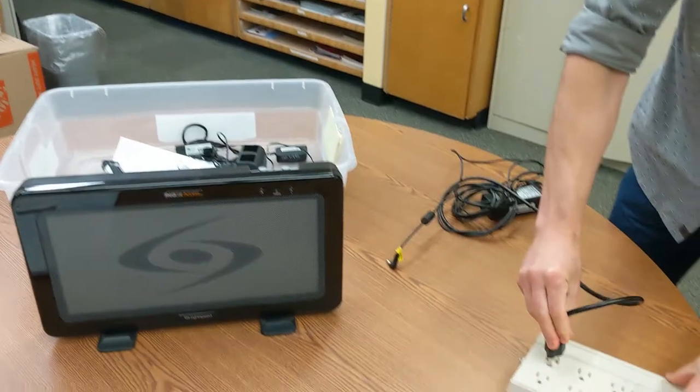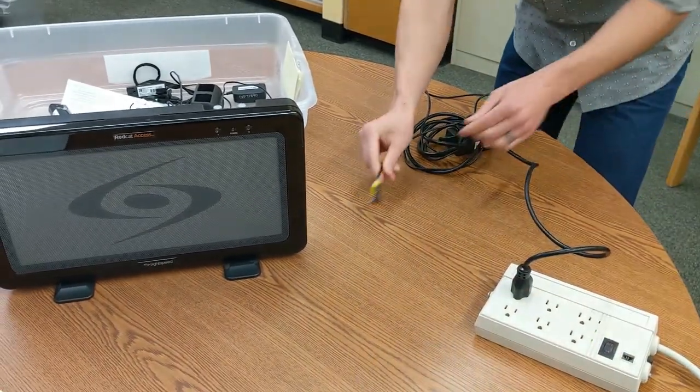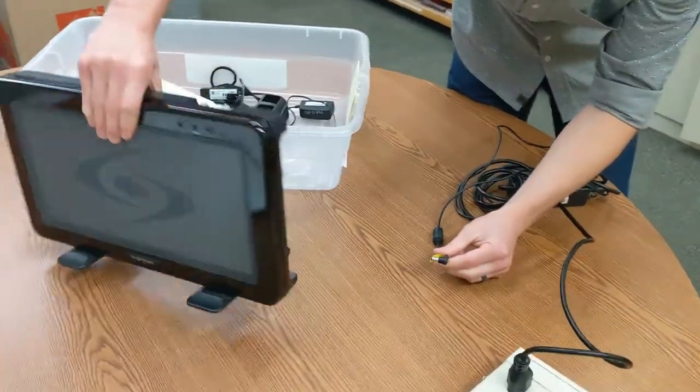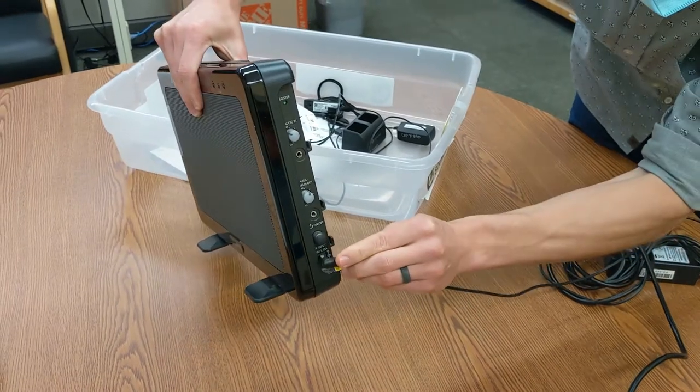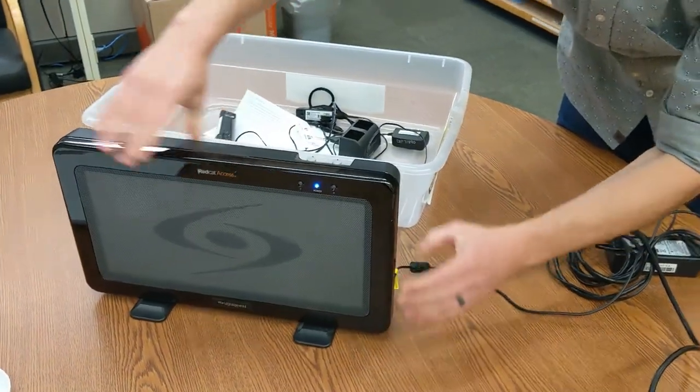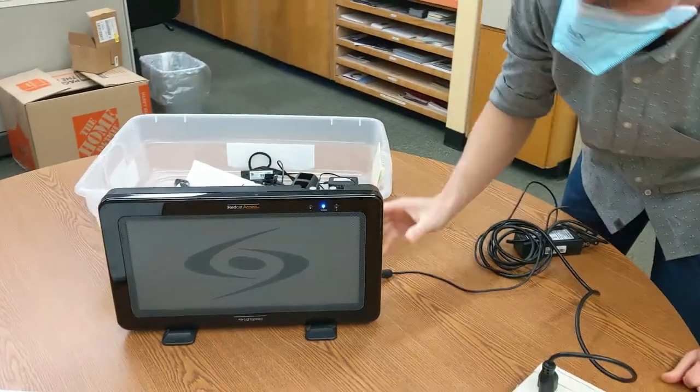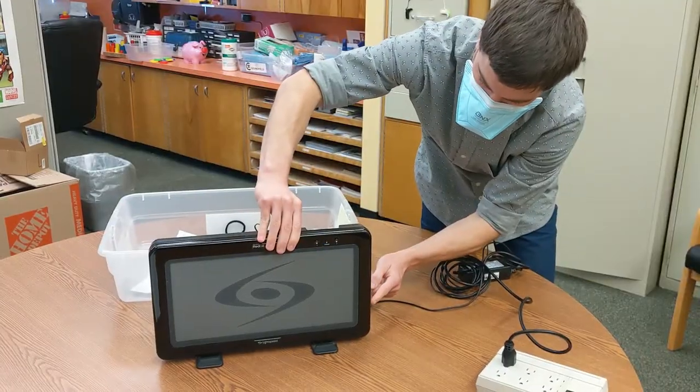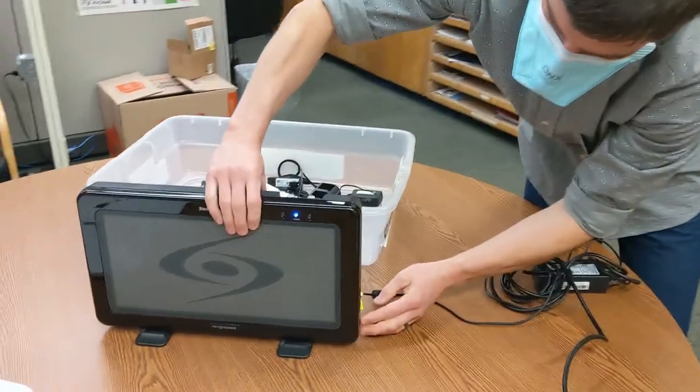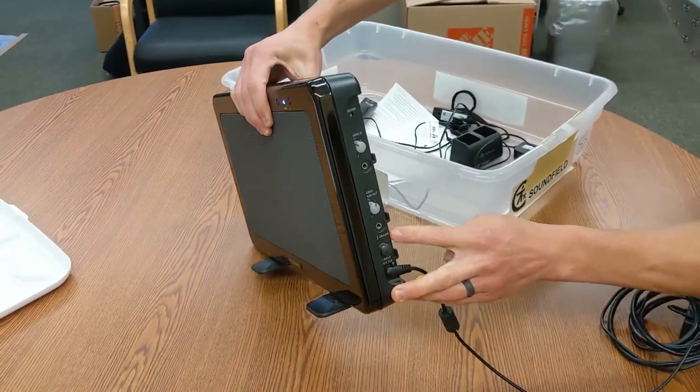Begin by using the large charging cable and plugging it in to the side of the speaker on its side panel. A blue light will come on indicating that the speaker is receiving power. If you do not see the blue light, there is a power button that you can press on the side panel.